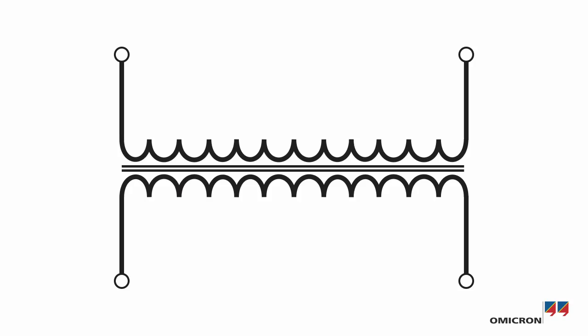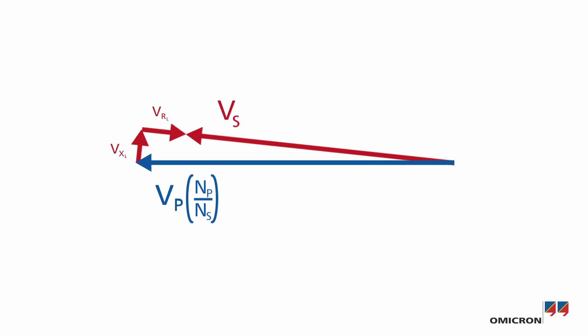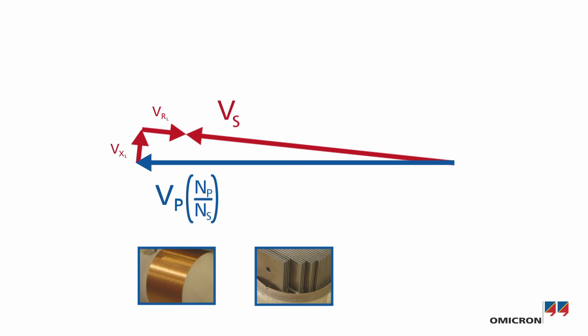The voltage transformer will transform the high voltage applied to its primary winding to a low voltage on its secondary winding with the ratio on its nameplate. The secondary voltage vector differs from its ideal corresponding primary vector due to internal losses, such as copper losses and iron losses.